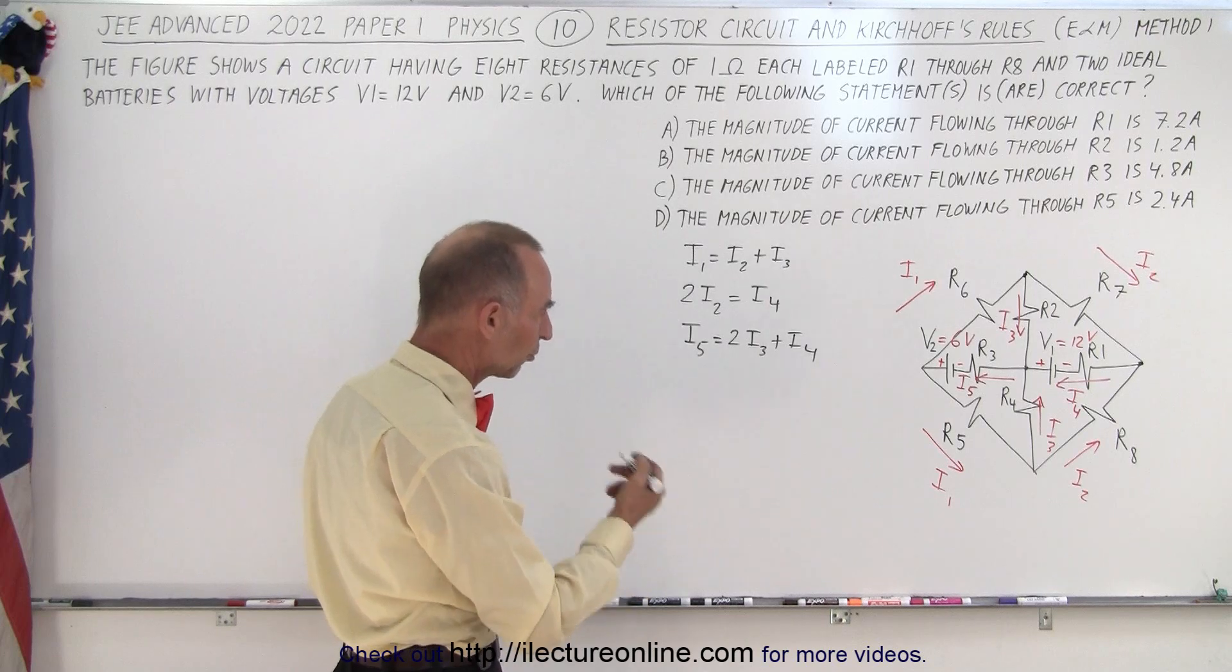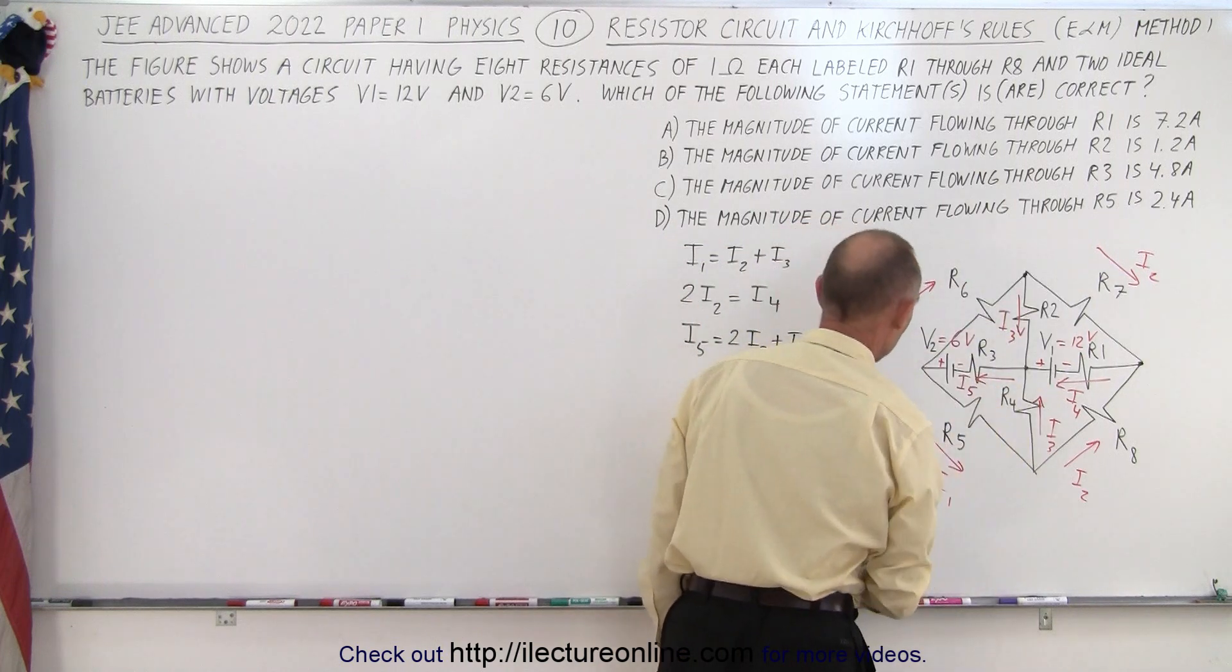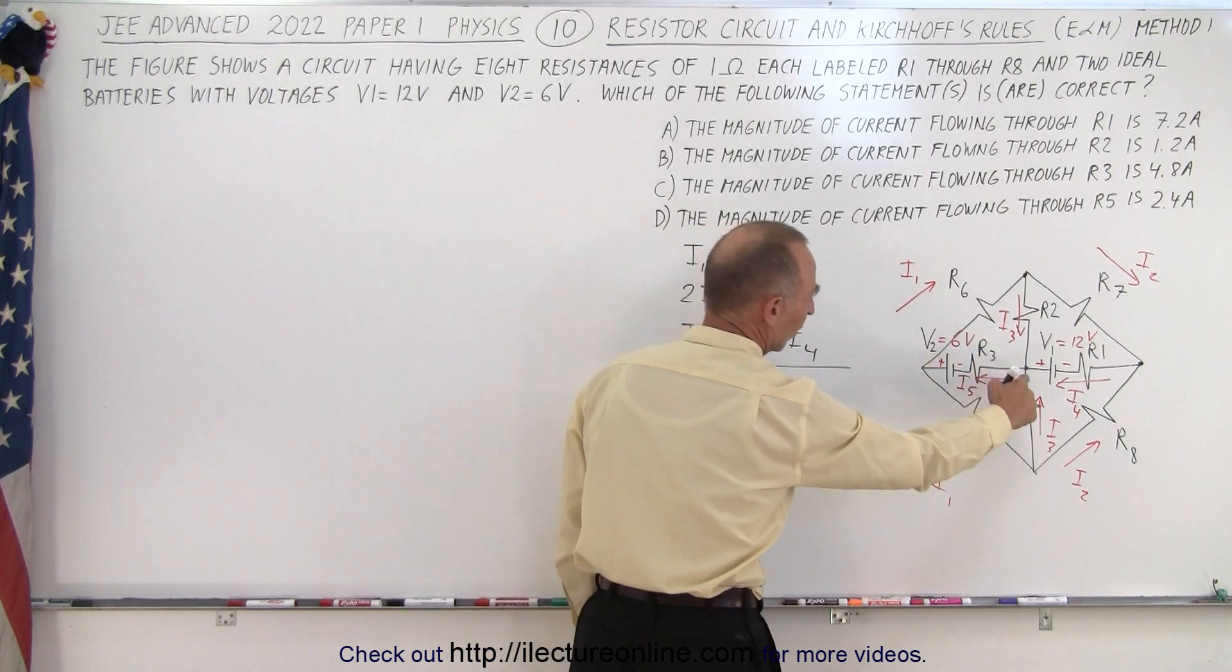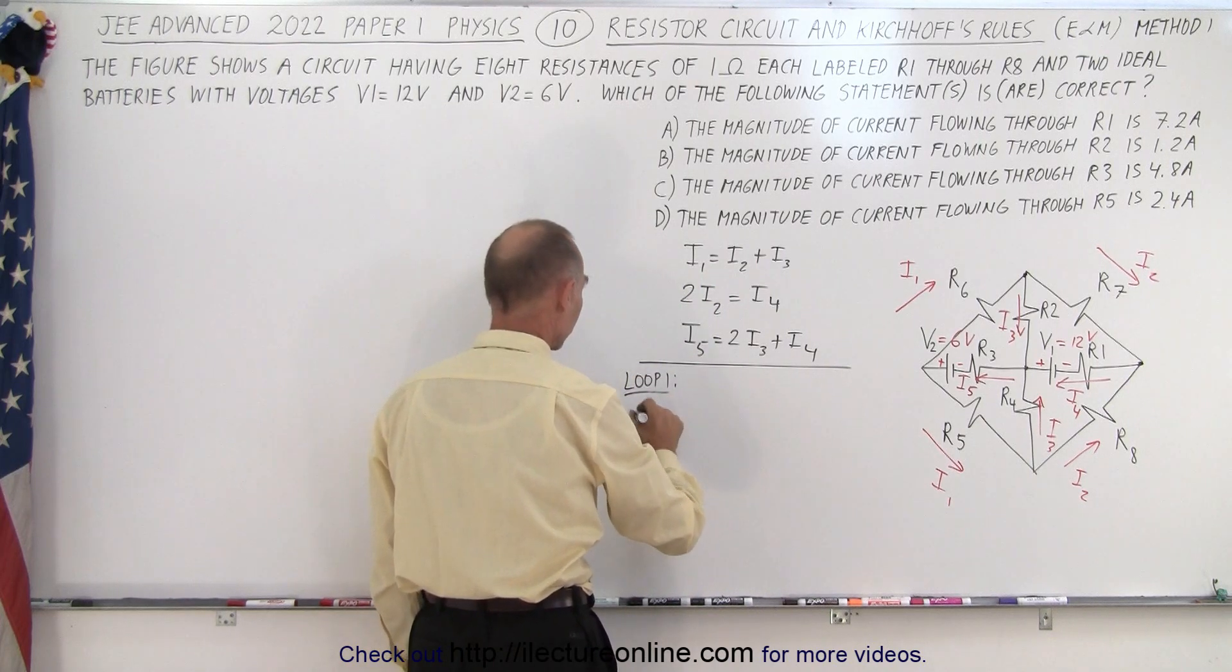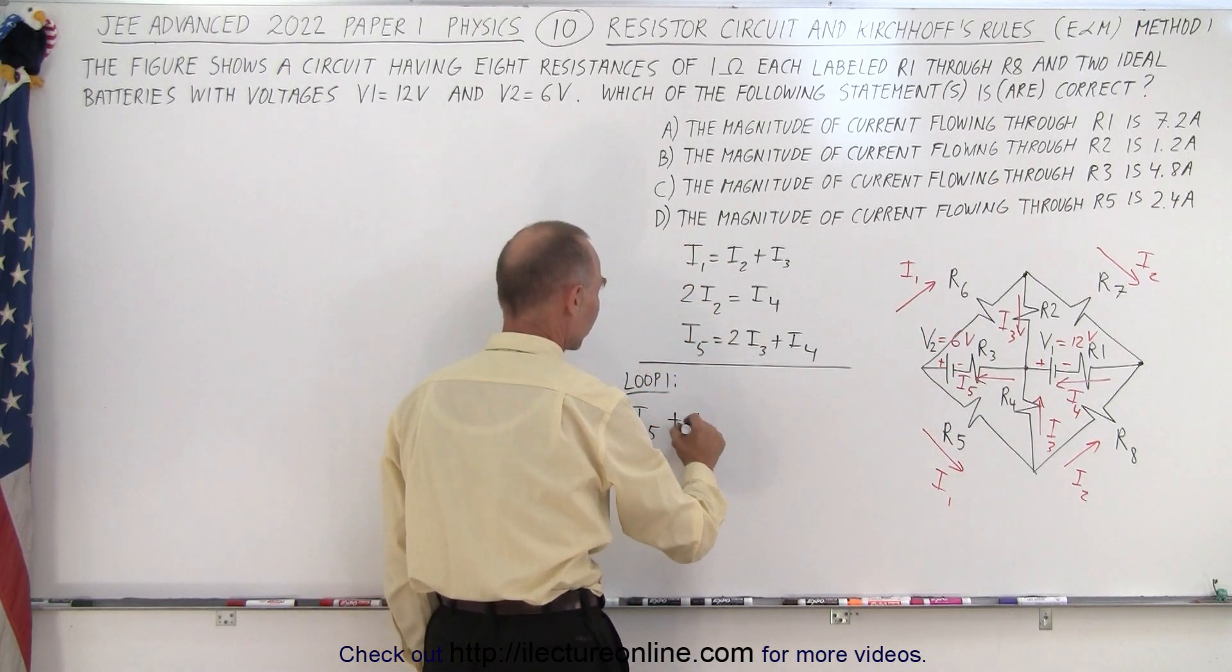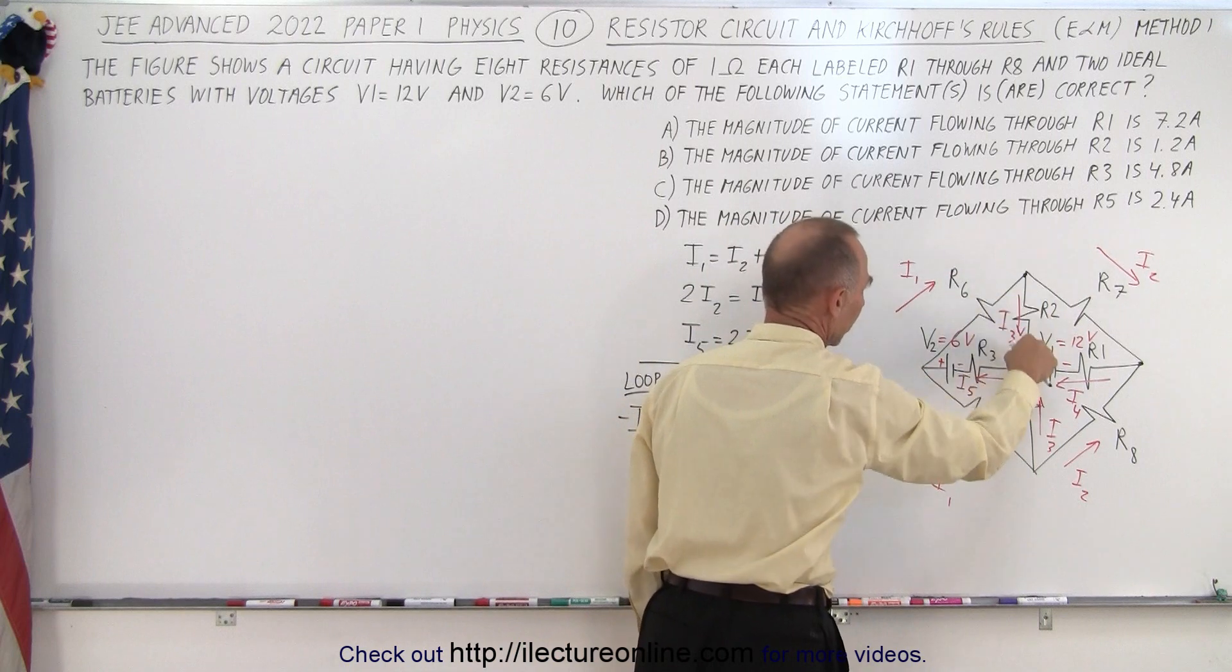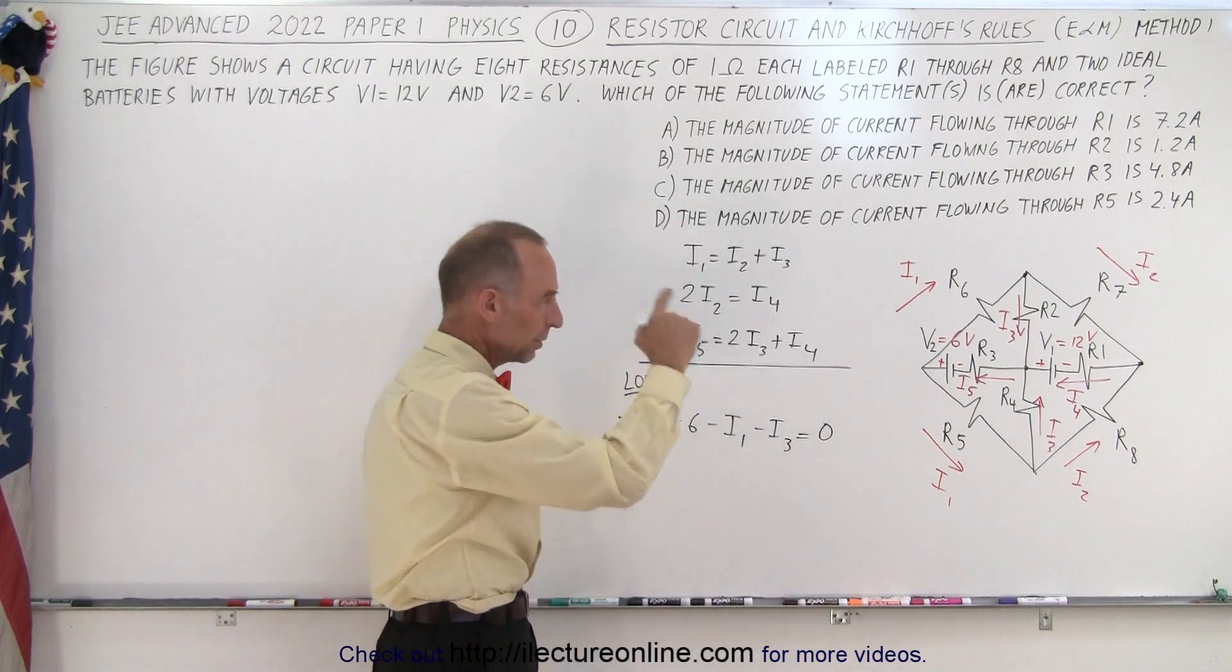We have five unknowns in the currents. So now we need two more equations to solve for all of them simultaneously. So we'll need to do some loops. One loop would be going this way. So doing loop one right here. Starting from this point right here we have a voltage drop across the resistor. We have current I5 so that's I5 times one or simply I5 and it's a drop so it's negative. Then we have a voltage rise across the battery plus six. Then we come this way and we see a voltage drop for I1 so that's minus I1. And then we're coming this way we have another voltage drop minus I3. And that must equal zero because we went all the way around the loop.